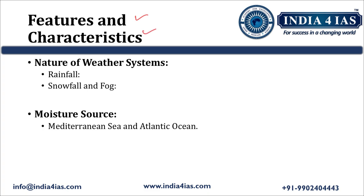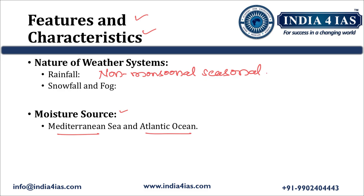Looking at the features and characteristics of Western Disturbance: their source of moisture is either the Mediterranean Sea or the Atlantic Ocean. They bring rainfall in the non-monsoonal season, that is in the months of January and February in Northern India, and they also cause snowfall and fog in Northern India.